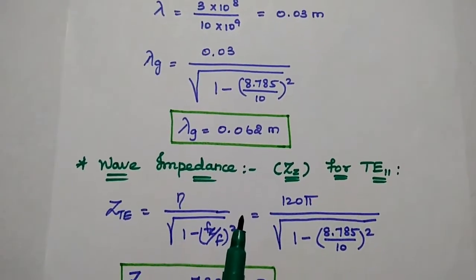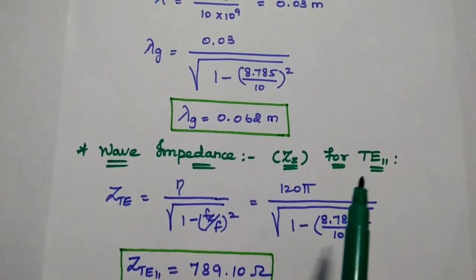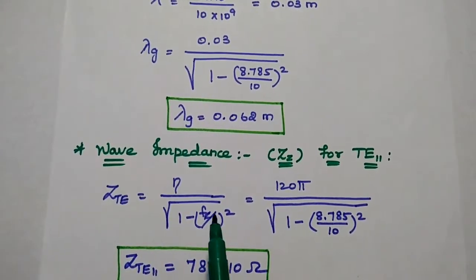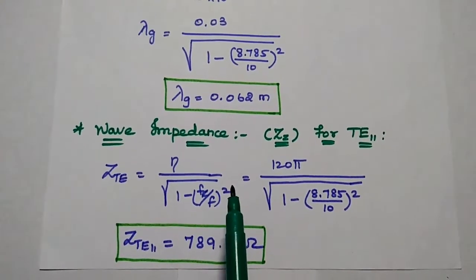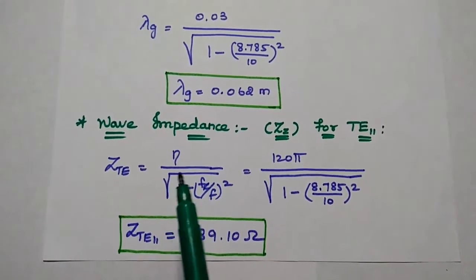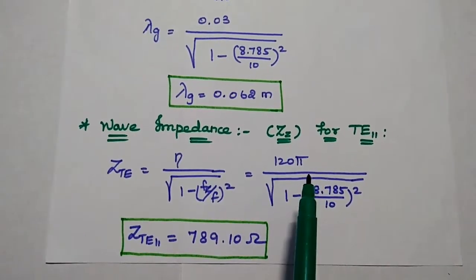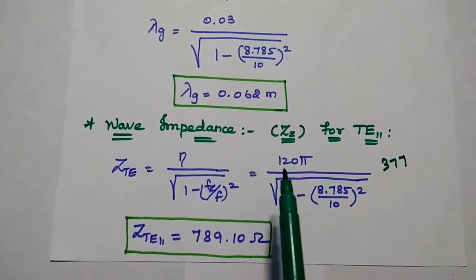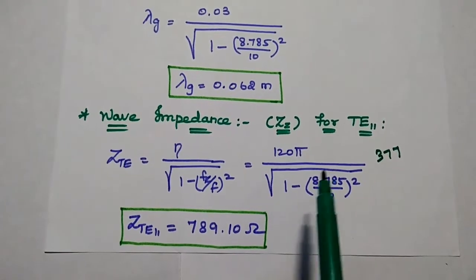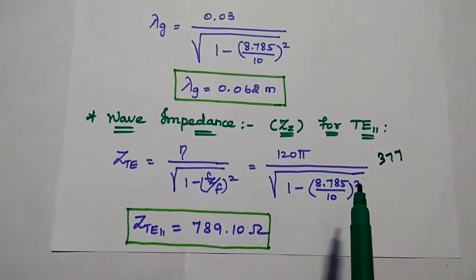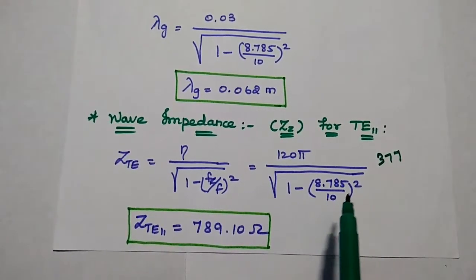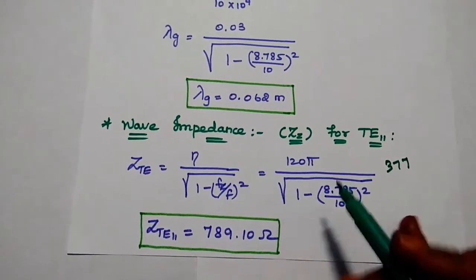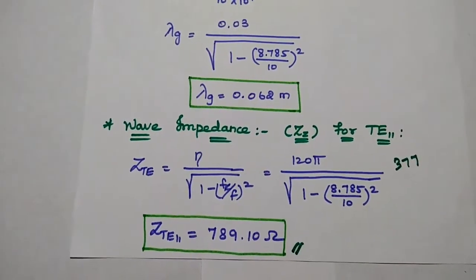The next one is wave impedance. Wave impedance for the dominant mode TE11 is equal to η / √(1 − (f_c/f)²). Here we substitute the value of η, the characteristic impedance, which is 377 ohm. Substituting: 377 / √(1 − (8.785/10)²), we get the answer as 789.10 ohm. This is the wave impedance for the TE11 wave.